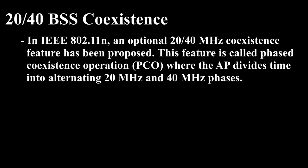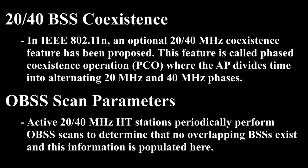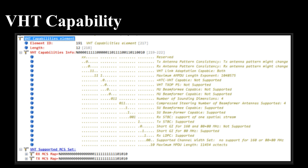20/40 BSS Coexistence: In IEEE 802.11n, an optional 20/40 MHz coexistence feature has been proposed. This feature is called Phased Coexistence Operation (PCO), where the AP divides time into alternating 20 MHz and 40 MHz phases. Overlapping BSS Scan Parameters: Active 20/40 MHz HT stations periodically perform OBSS scans to determine that no overlapping BSSs exist, and this information is populated here.